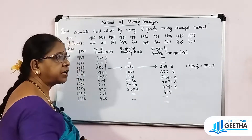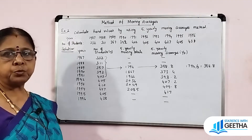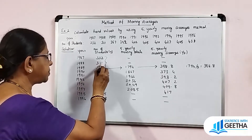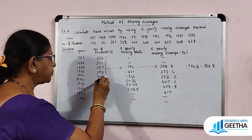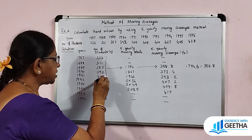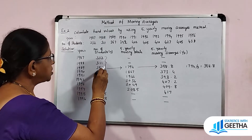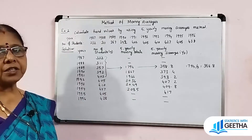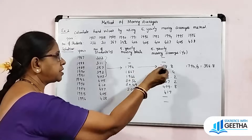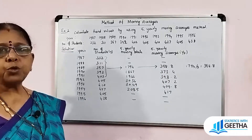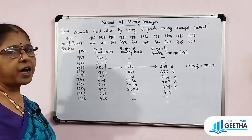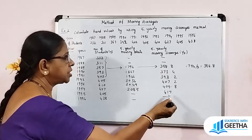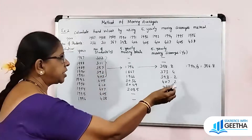The last two years have no trend values. These are the 5-yearly moving averages, where we compute A+B+C+D+E, then B+C+D+E+F, then C+D+E+F+G, etc., placing totals at the center year. Dividing each total by 5 gives the trend values. These observed values and trend values complete the 5-yearly moving averages method.